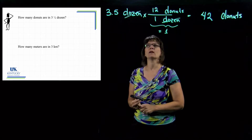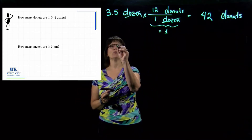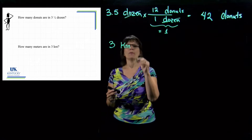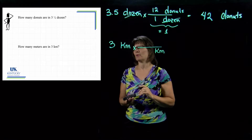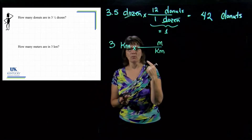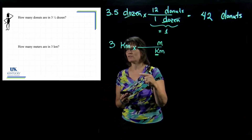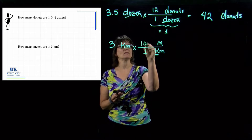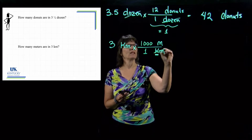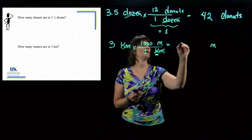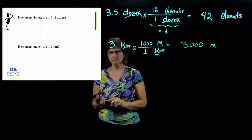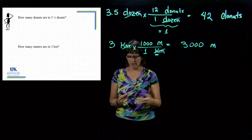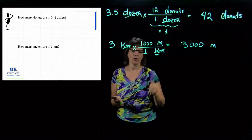How many meters are in three kilometers? We start with what we're given: 3 kilometers. Here is where memorization of prefixes is important. We want to get rid of kilometers and go to meters. We know kilo means a thousand. Put a one where you see the prefix with k, and put what it means with the base unit — the meter. That gives us kilometers canceling, leaving meters, and the answer is 3,000 meters. This is a very common kind of conversion when learning and memorizing these prefixes.